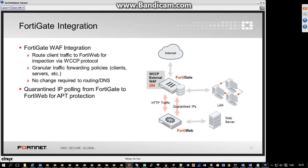We've added two integration points this year. The first is what we call the 40Git WAF integration. Using the WCCP protocol, it allows customers to define very granularly on the 40Git which type of traffic to forward to 40Web for scanning. For example, a customer can say they just want to see how the 40Web solution works and forward traffic only for a specific application. Granular traffic forwarding policies can be based on specific clients or specific servers, and you can define or remove rules on 40Git as needed.